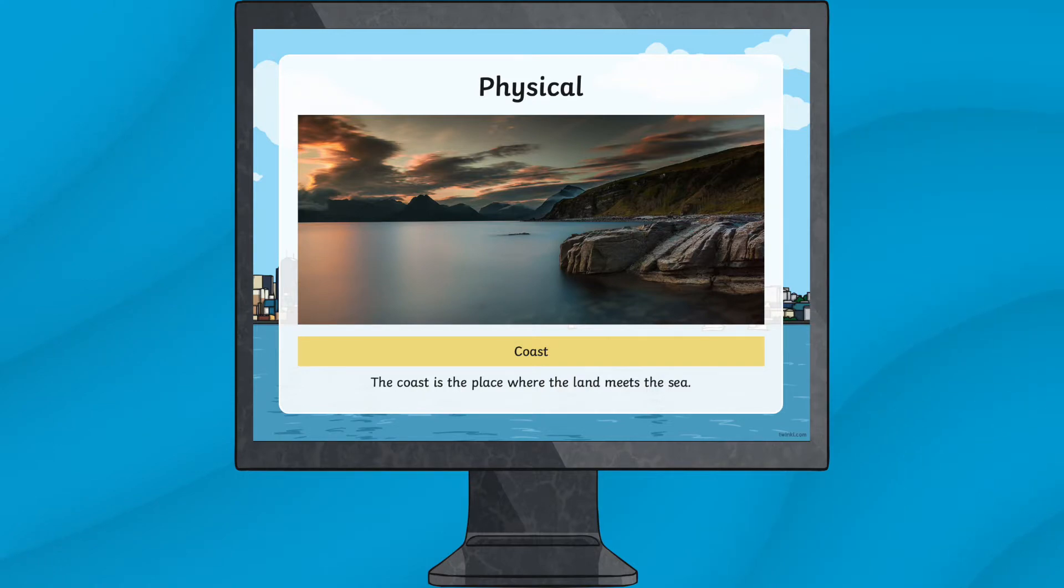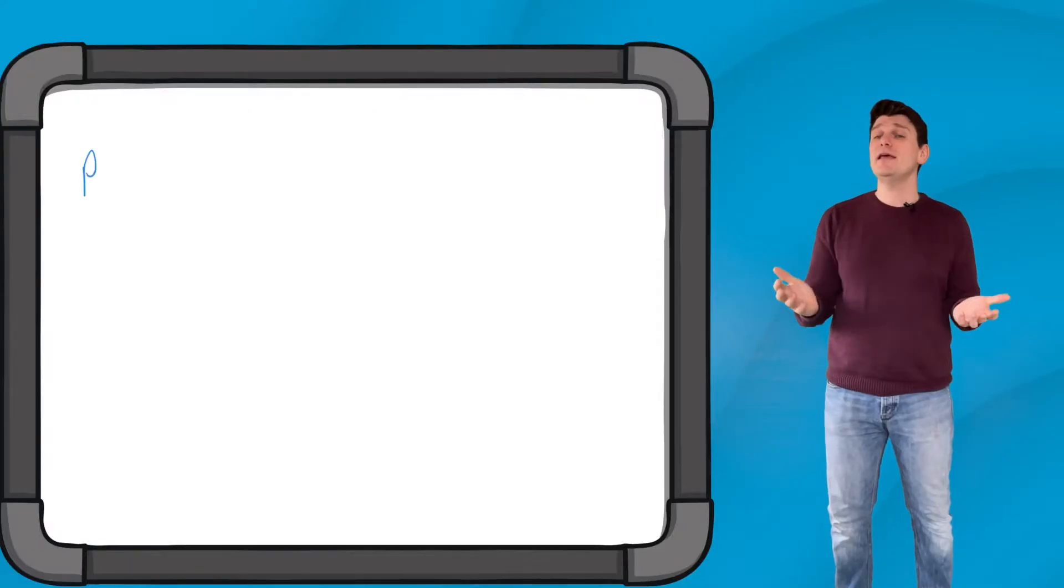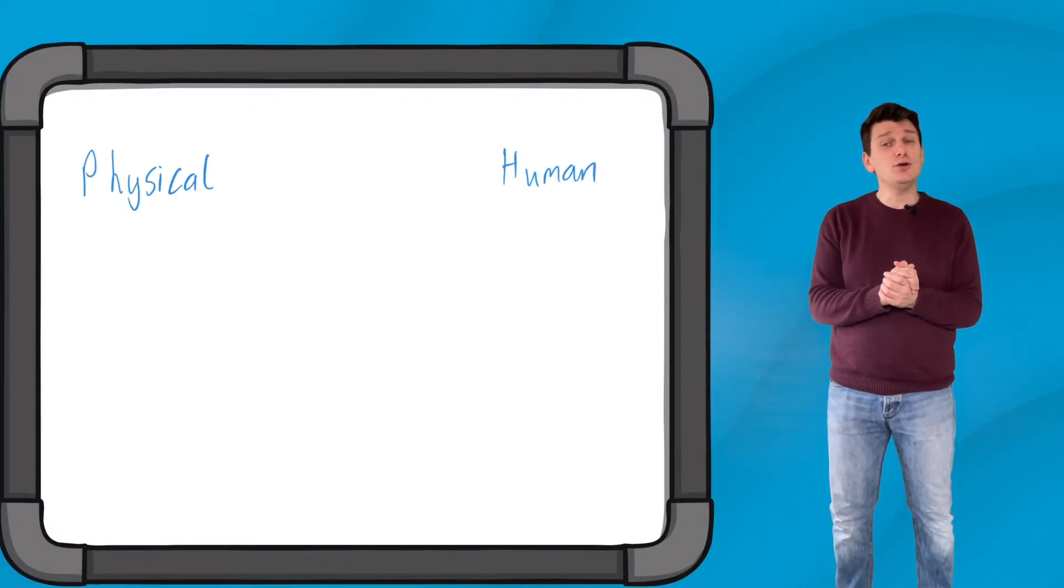It's a perfect way to introduce the concepts of human and physical geography to Key Stage 1 children. As an extra activity, you could have a discussion with your children about the differences between human and physical geographical features. Maybe they could even think of the physical and human geographical features in their hometown and list them down.